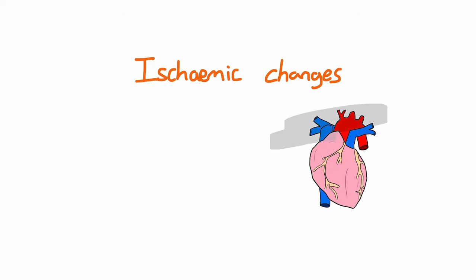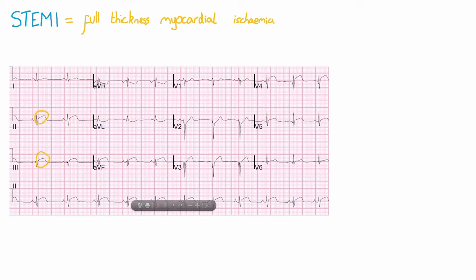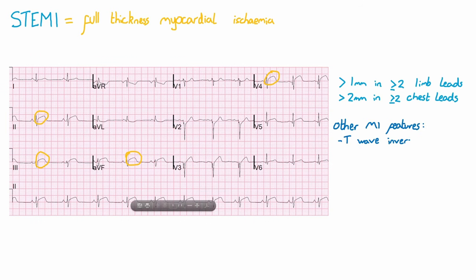Next, we're going to look at ischemic changes that you can see on the ECG, associated with myocardial infarction, also known as a heart attack. First we'll look at STEMIs, then bundle branch blocks. A STEMI, or ST elevation myocardial infarction, occurs when there is ischemia across the full thickness of the myocardium. Have a look at this ECG and appreciate how leads 2, 3, AVF, and V4 all have ST elevation. ST elevation is significant if it's greater than 1 mm in 2 or more contiguous limb leads, or greater than 2 mm in 2 or more contiguous chest leads. There are other ECG features that can also represent myocardial ischemia, including T wave inversion, tall T waves, ST depression, and left bundle branch block.